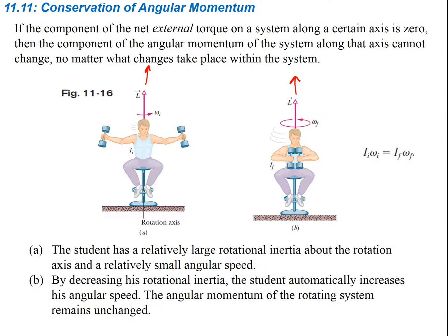A student has relatively large rotational inertia and a relatively small angular speed when carrying two weights held as far out as possible — increasing moment of inertia means angular speed is relatively low, since L = I·ω. If he brings those weights in close to his body, he decreases his moment of inertia, which means he must increase his angular speed.